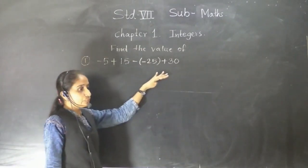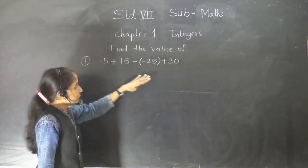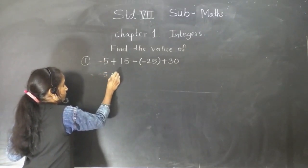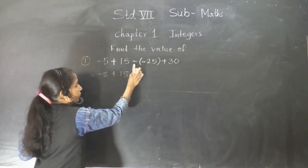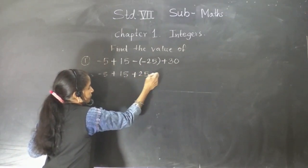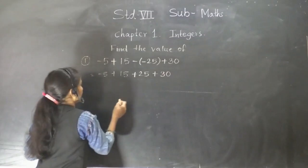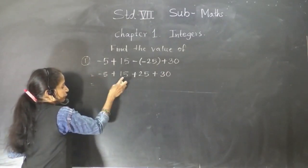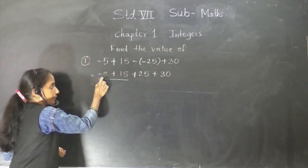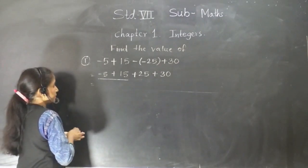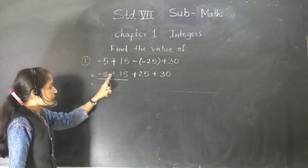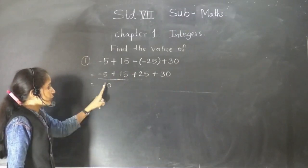Now, first, what is the rule? First, we should open the bracket. In many numbers we can add this. Minus 5 plus 15. By opening the bracket, we will write plus 25 plus 30. Now we also have minus 5 and plus 15. Minus plus again minus. So from 15 we have to subtract 5. The answer will be 10. For the sign, we give the sign of the greater number, which is 15. So the sign is plus.